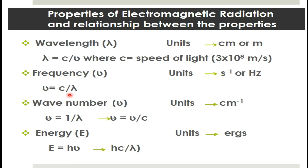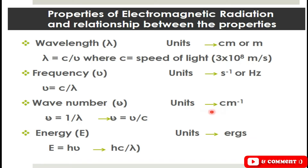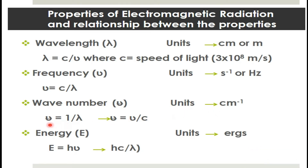Nu has a mathematical relationship with lambda: nu equals c over lambda. The third property by which we can represent electromagnetic radiation is wave number, represented by nu-bar. It has units of centimeter inverse, and it is the number of waves passing through a unit distance. Mathematically, nu-bar equals 1 over lambda, or equivalently nu-bar equals nu over c.